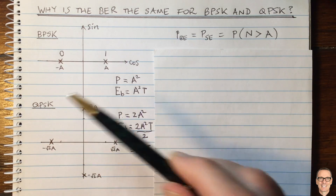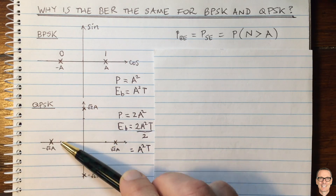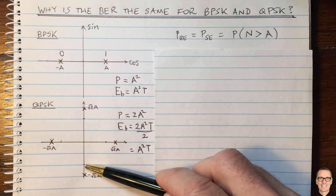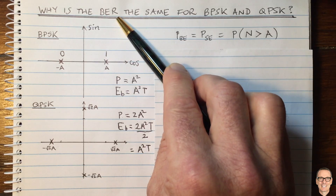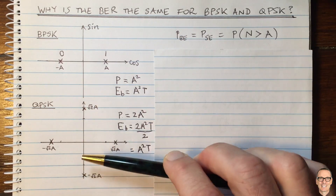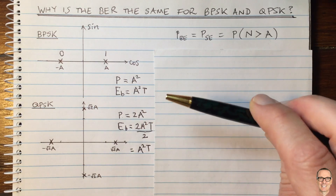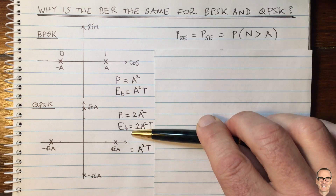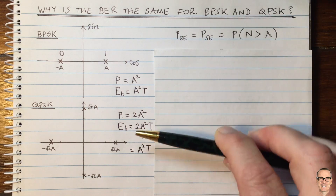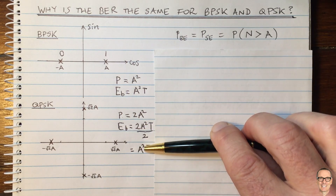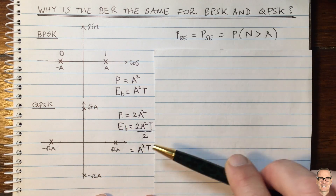This is really the crucial importance in terms of why the bit error rate can be plotted to be the same for BPSK and QPSK. If I'd drawn the QPSK constellation where the power was the same, then the four constellation points would be at A and negative A on each axis, and we would have a different energy per bit. So when thinking about bit error rates and comparing between schemes, you need to be careful: are you plotting with respect to signal-to-noise ratio, or with respect to energy per bit?